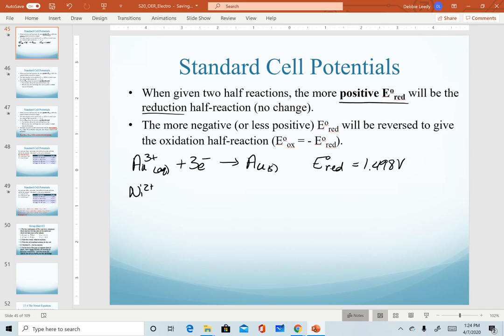We had nickel two plus ion being reduced down to nickel solid. That one had a reduction potential of negative 0.257 volts.